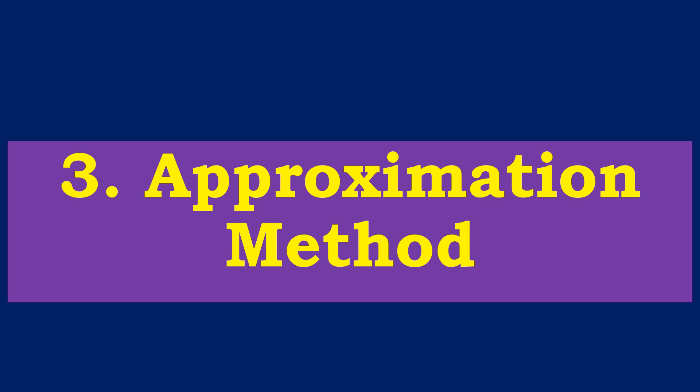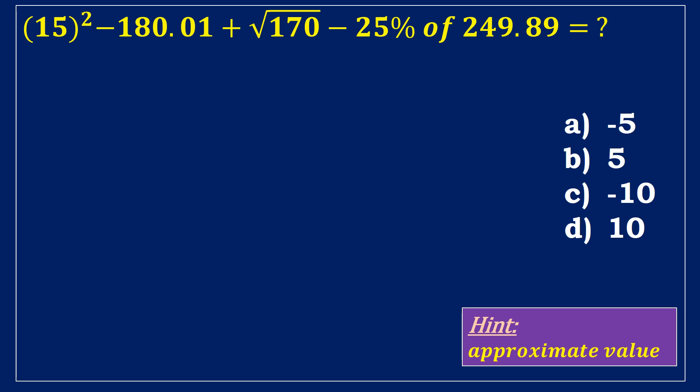Model 3. Approximation. Let's look at an example to understand this simplification concept with the approximation technique. Simplify the equation 15 square minus 180.01 plus square root of 170 minus 25% of 249.89. Using the approximation technique, we solve this problem in a smart way. Take 180.01 is 180. The number 170 in the question is not a perfect square value. The square root of 169 is 13. So, consider the value 169 instead of 170. Next, 249.89 should be rounded to 250.